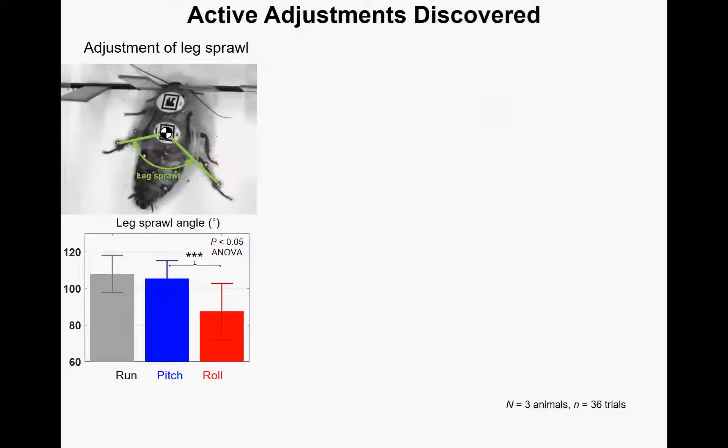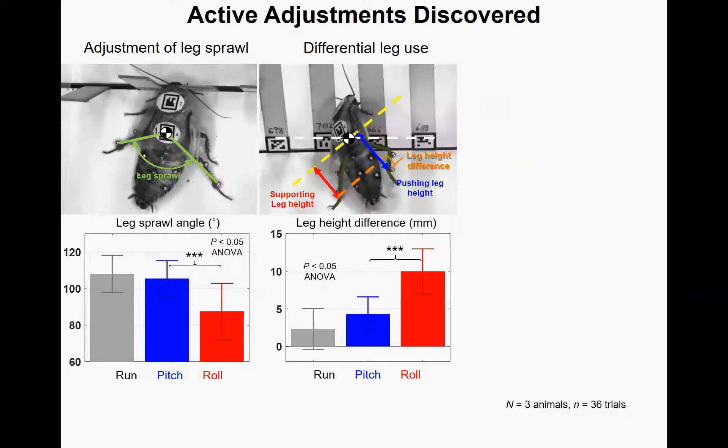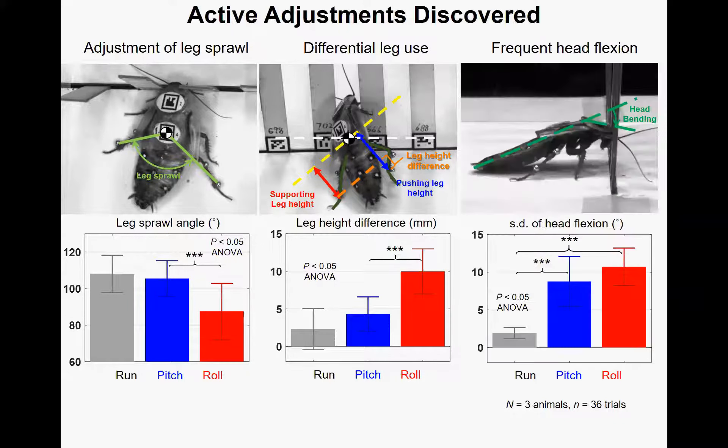We did the experiment again and found that the animals are using three kinds of active adjustments. First, leg sprawl. The animal sprawls its leg inward while rolling its body. Second, differential leg use. While rolling, the animal extended one leg to push the ground while retracting the other to support its body. And third, head flexing. Before and during rolling, the animal flexes its head up and down frequently.